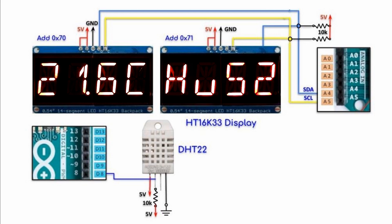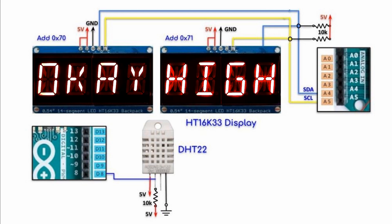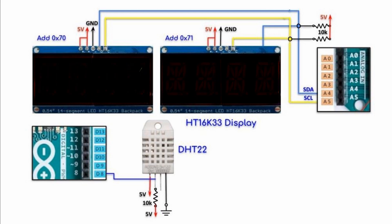If humidity is less than 50%, low humidity is displayed. If humidity is greater than 50%, high is displayed.